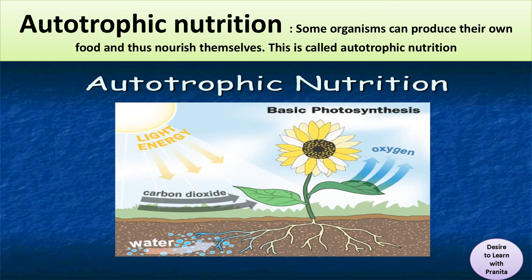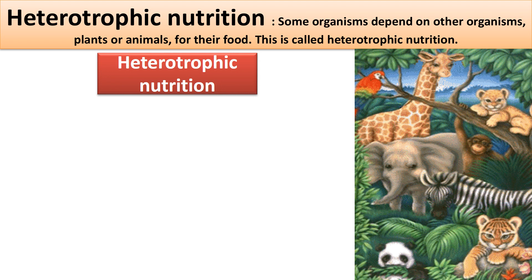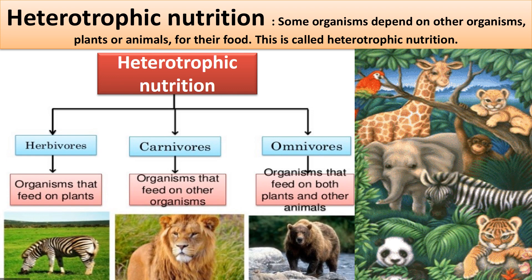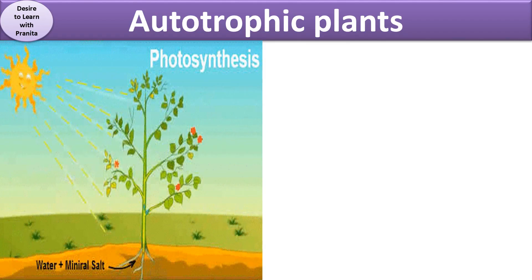Some organisms can produce their own food and nourish themselves — this is called autotrophic nutrition. Some organisms depend on other organisms, plants or animals, for their food — this is called heterotrophic nutrition.